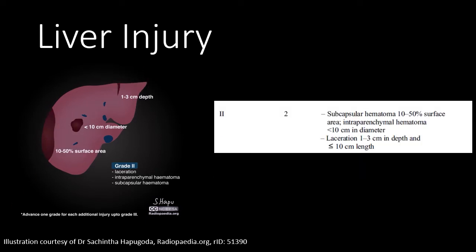A grade two liver injury can be classified as either a hematoma or a laceration. A subcapsular hematoma should occupy less than 50 percent of the surface area. If there is an intraparenchymal or contained hematoma within the liver, it must be less than 10 centimeters and show no evidence of active extravasation. A laceration will be grade two if it is less than three centimeters in depth.